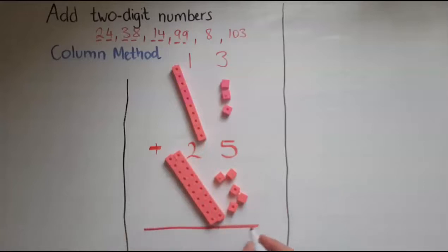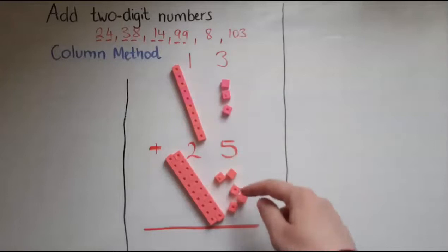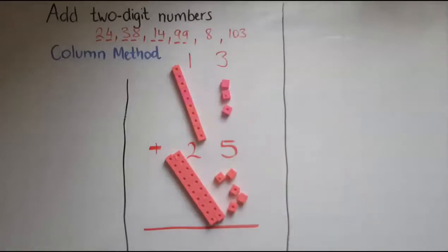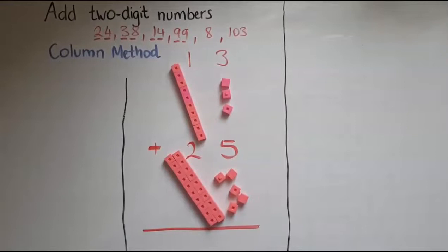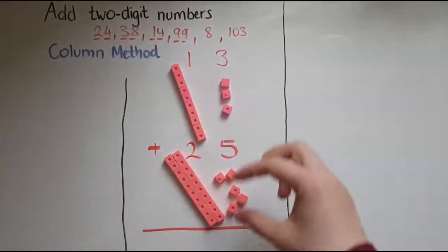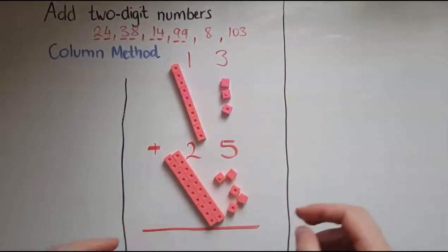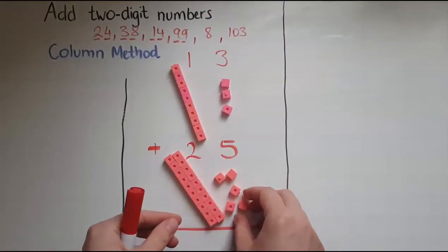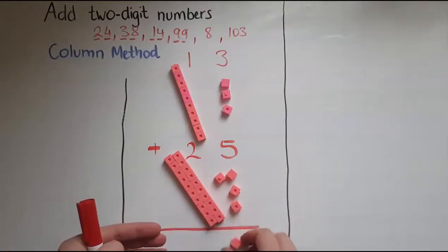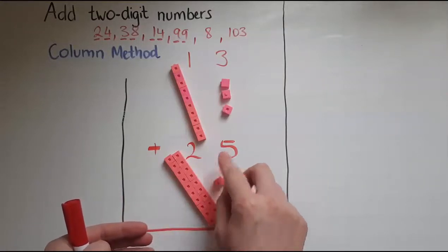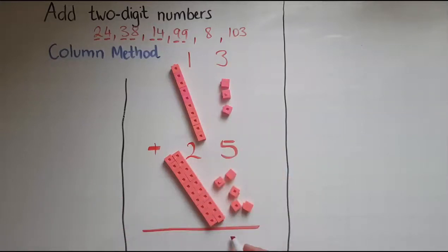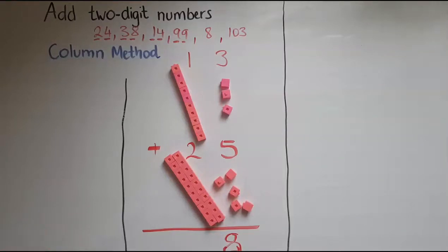How much or what does this add to? So I'll start adding the cubes, the units, because I might be able to make a block of 10 with them and transfer them to the tens. So let's see what do I have. So I've got, when I put these together, I've got 1, 2, 3, 4, 5, 6, 7, 8. So that makes 8. So the units make 8.